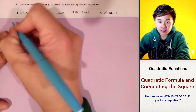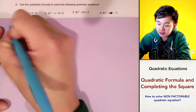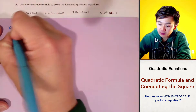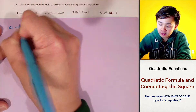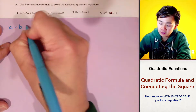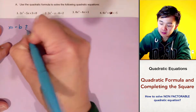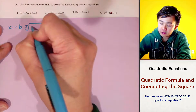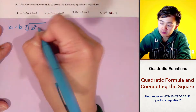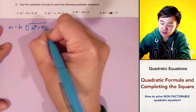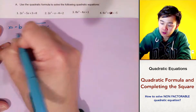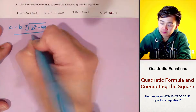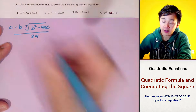The quadratic formula is x equals negative b, or the opposite of b, plus or minus the square root of b squared minus 4ac, all over 2a.